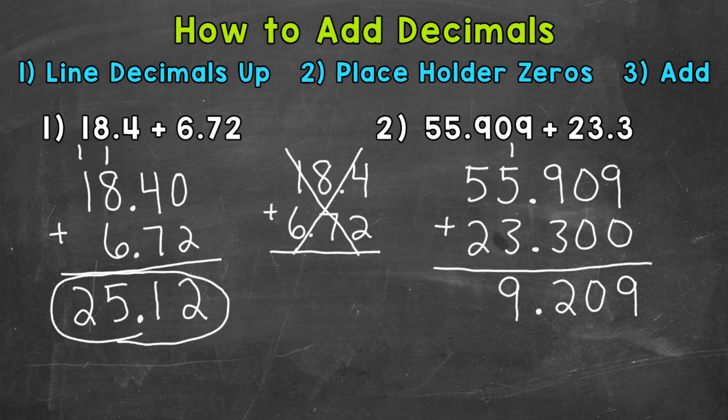And then, we end with the 10's. So, 5 plus 2 is 7. So, our final answer, 79 and 209 thousandths.